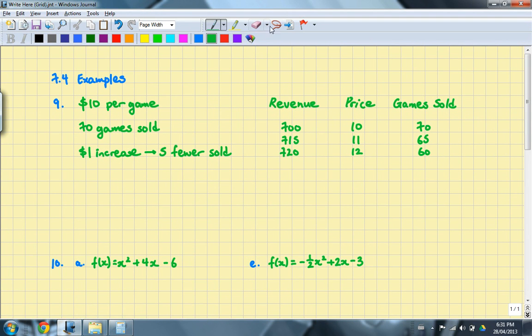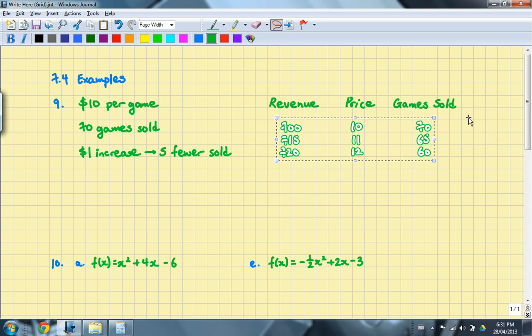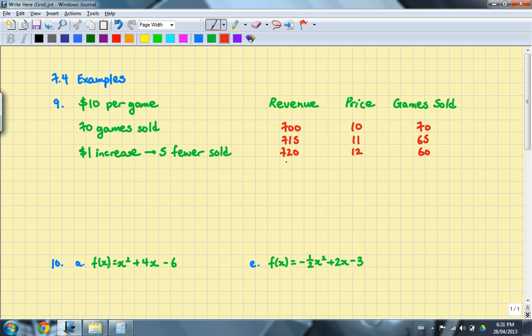So that's kind of the idea. Now what we want to do is to generalize that result. So the revenue in general is going to be equal to price, so that will be $10 plus the number of increases and then 70 minus 5 times that number will be sold, because for every dollar increase, 5 fewer games will be sold.